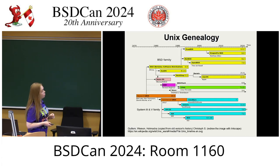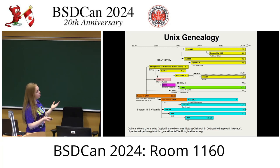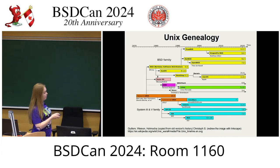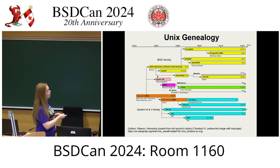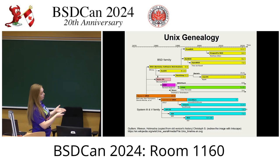The Unix genealogy shows a family tree where we can see where BSD came from, and the common history between all of these systems. Even Microsoft was back there at one time. It did stop considerably, and BSD kept moving forward, but at one time everyone shared a common history.